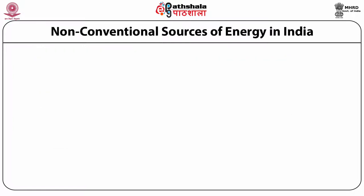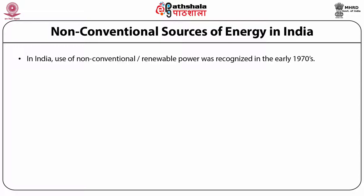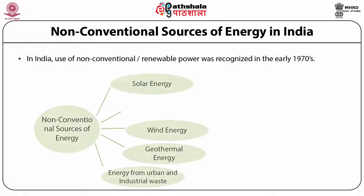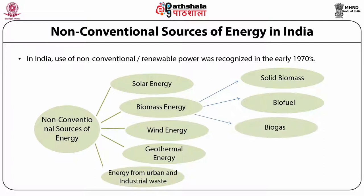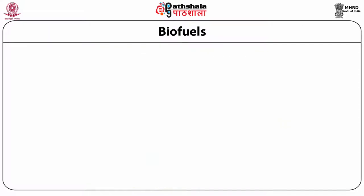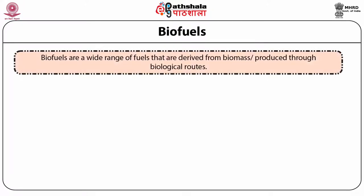Non-conventional sources of energy were first recognized in India in the year 1970. Among different forms of non-conventional energy sources, biomass energy is one of the significant sources. Biomass energy is categorized into different forms based on the form of energy along with the feedstock used for production — one is solid biomass, another is biofuel, and another form is biogas. Biofuel is the fuel or energy which is produced through the use of biological forms or from biomass sources.